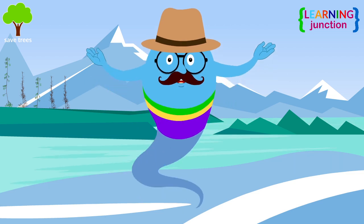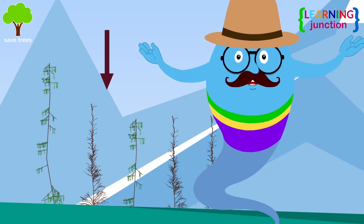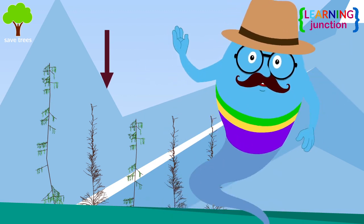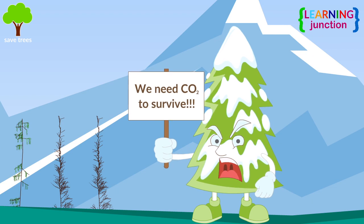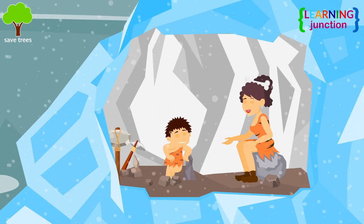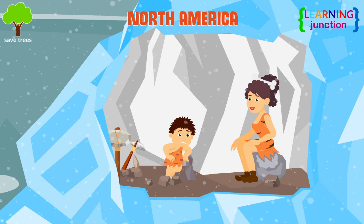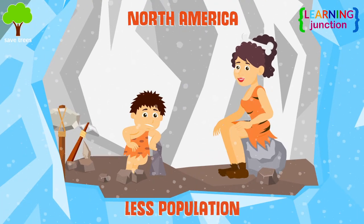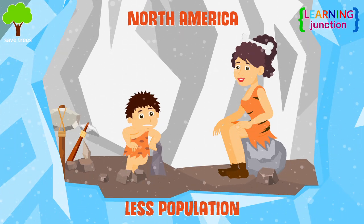During the Ice Age, the Earth's surface was entirely frozen. Only a few plants, including the evergreen trees, could grow in the harsh, frozen soil. There wasn't enough carbon dioxide in the air to support vegetation. Analysis showed there were humans in North America before, during, and immediately after the peak of the last Ice Age. The population was very low because it was so tough to survive the extreme cold.